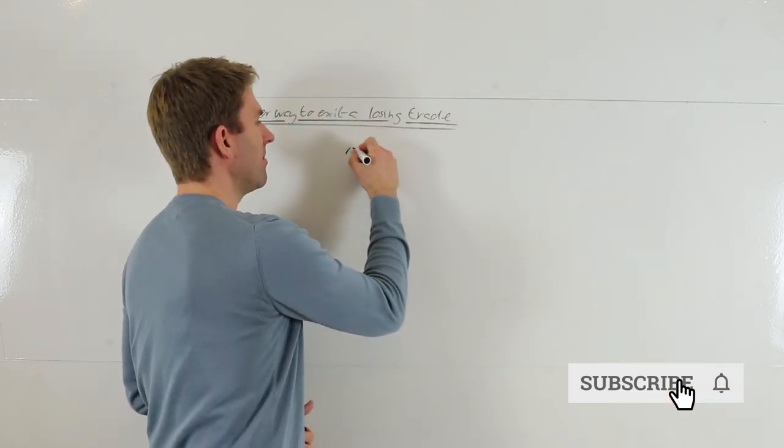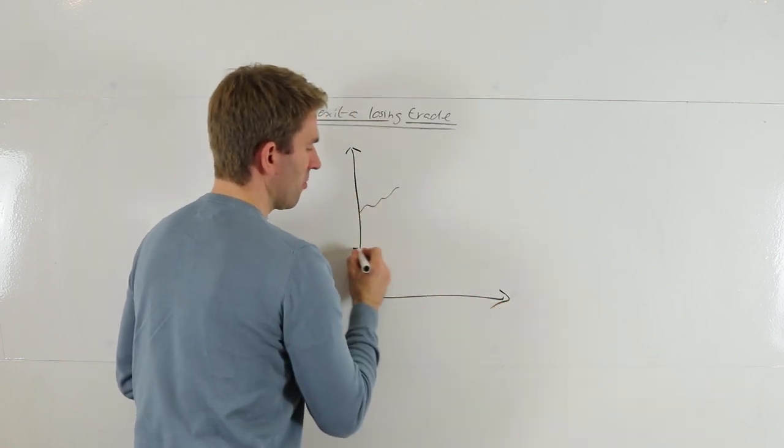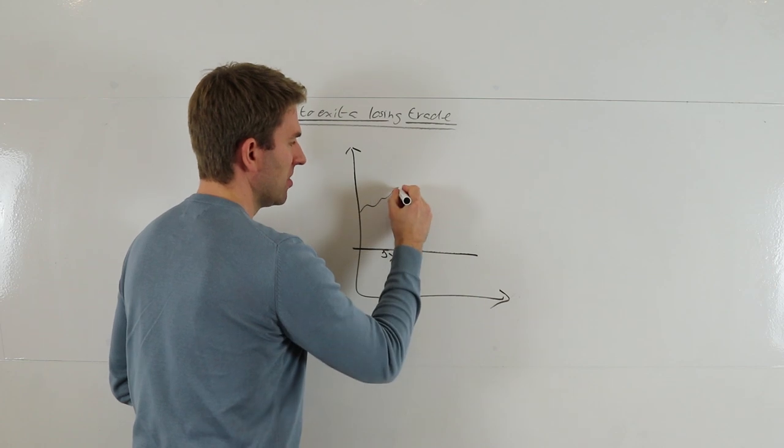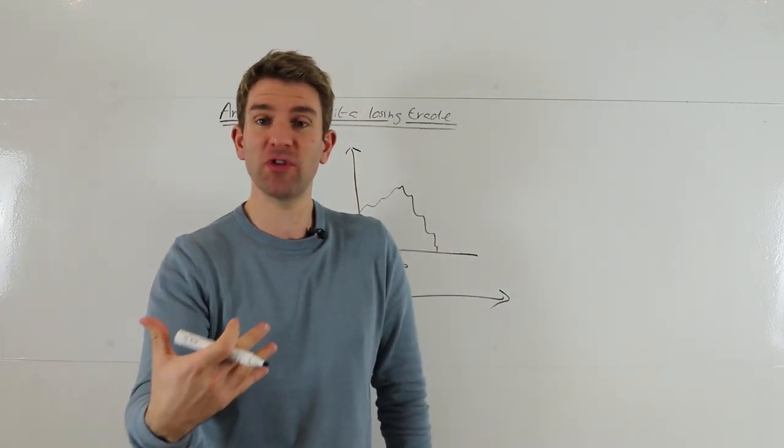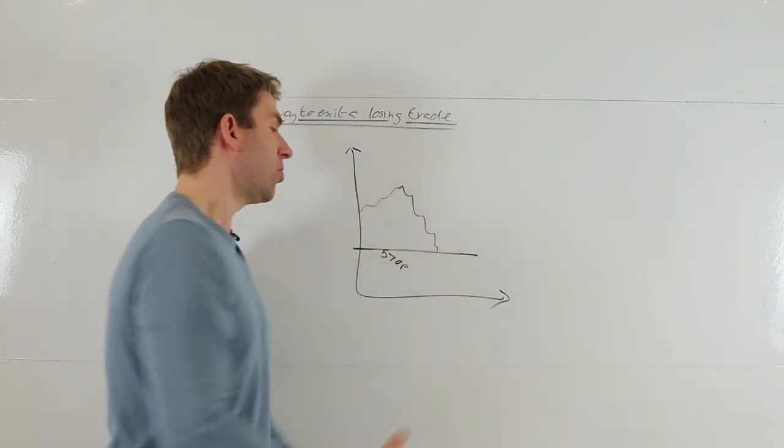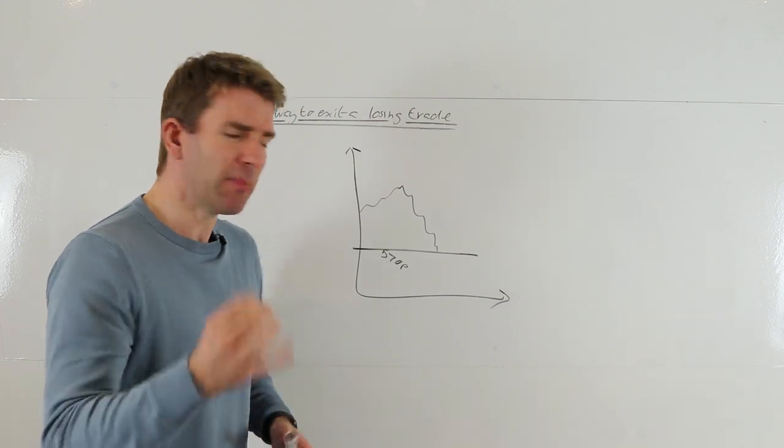We have a position on. If you imagine that we are in a long position and imagine that we've bought here and we've got our stop loss around this level. So the market comes down to here. What normally happens when we have a stop loss triggered is it fires the order at our stop.